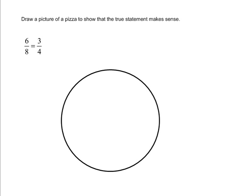Draw a picture of a pizza to show that the true statement makes sense. So the true statement that we're given is that 6 eighths is the same thing as 3 fourths. So we want to create a visual of what this would look like.